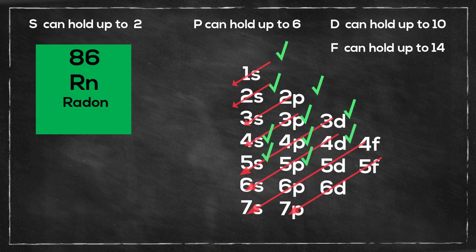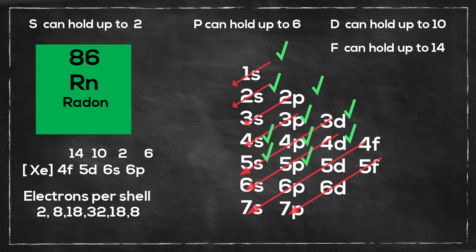Next we have radon and that is xenon plus 4f14 5d10 6s2 6p6 and the electrons per shell 2 8 18 32 18 and 8.